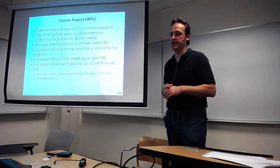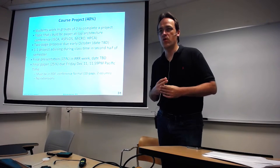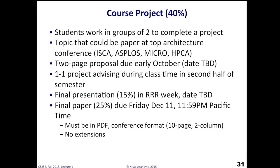The course project is a big and fun part of the class. Students should work in groups of two on a project, and the topic should be anything that might appear at a top architecture conference. We'll want a two-page proposal by early October — about six weeks from now. The first half or two-thirds of the class has lectures and discussions, then towards the end we move to a one-on-one model: during class time we'll split into slots for different project groups and meet with you to help get the project finished.